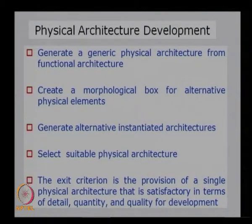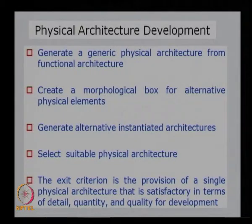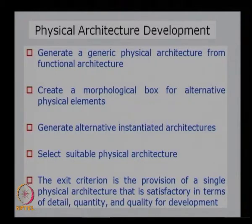Using these alternative physical elements, we generate alternative instantiated architectures. An instantiated architecture is a physical architecture where we identify the actual component and write it down instead of the generic physical name. This makes it more specific — that is why it is called instantiated architecture. We have many choices and select a suitable physical architecture based on requirements.